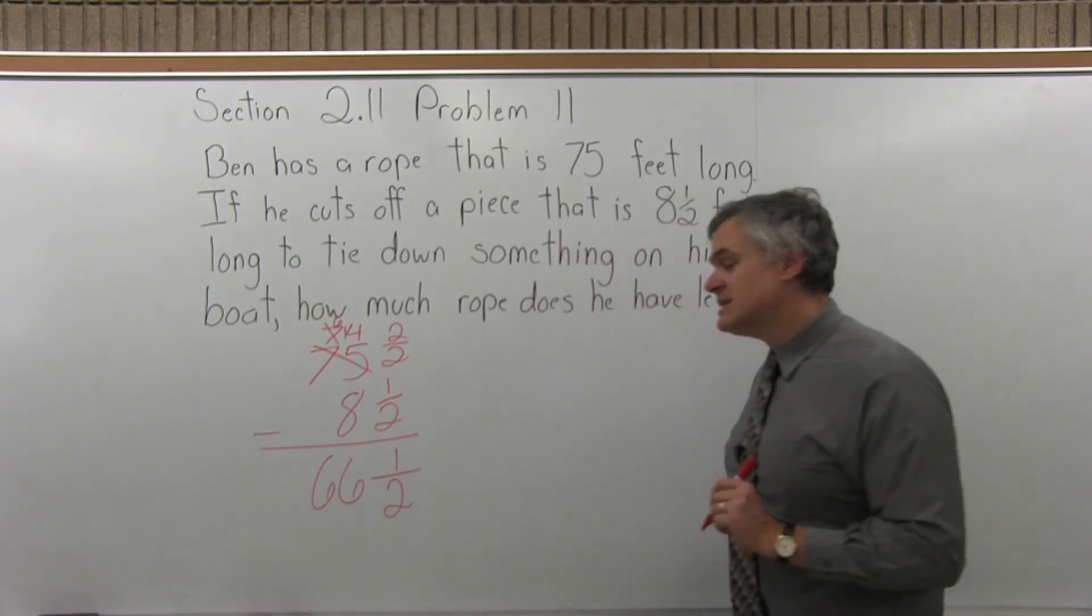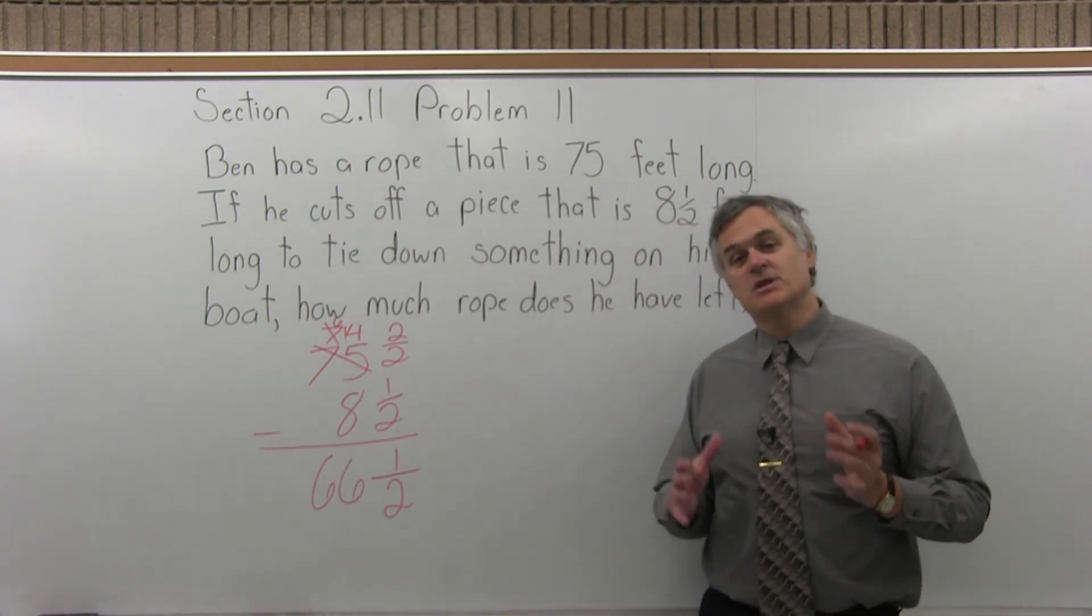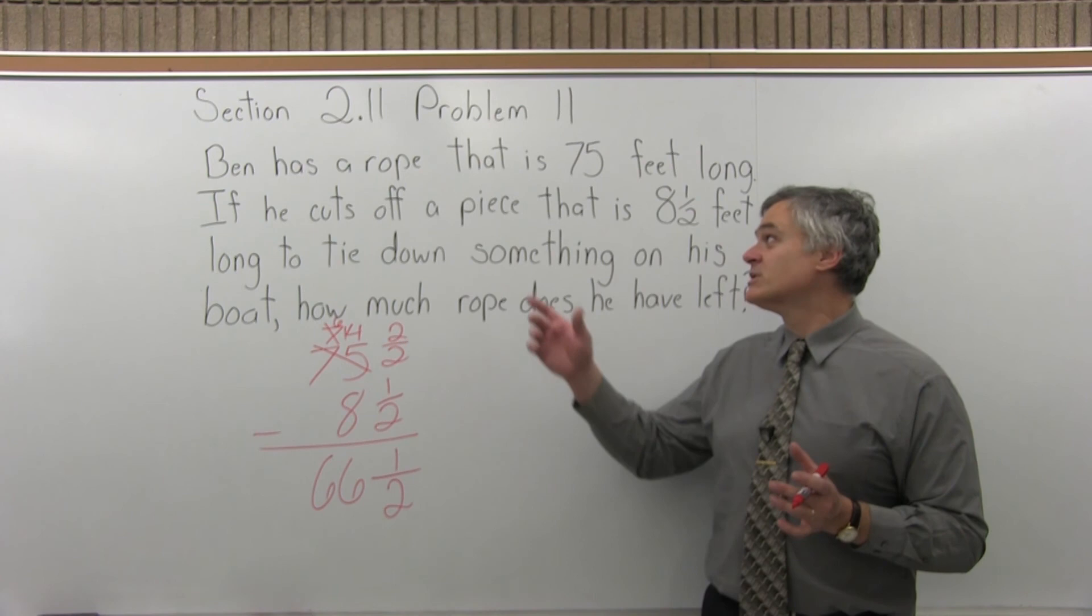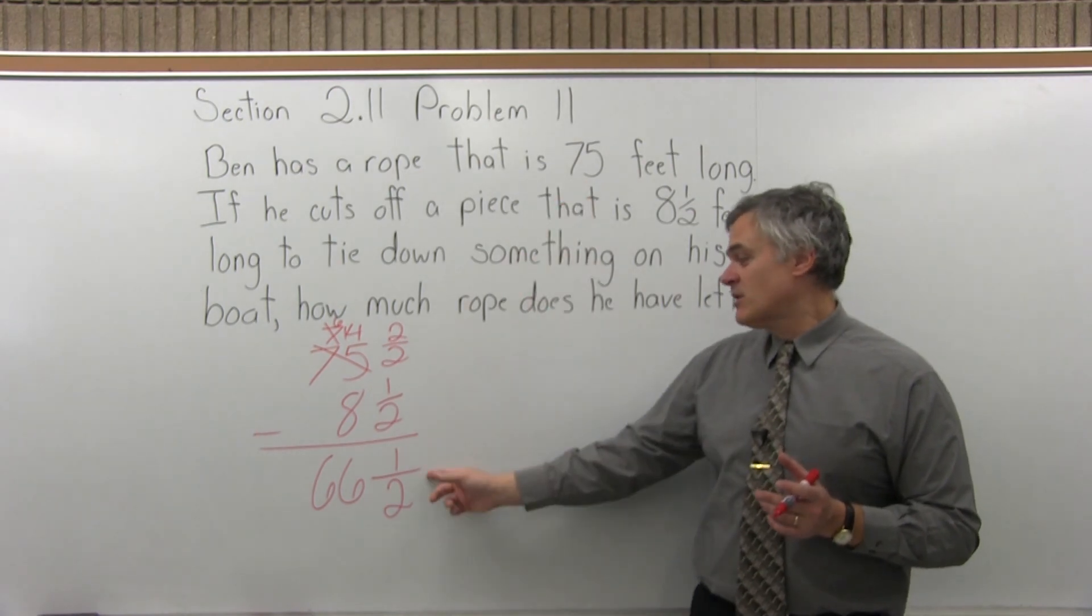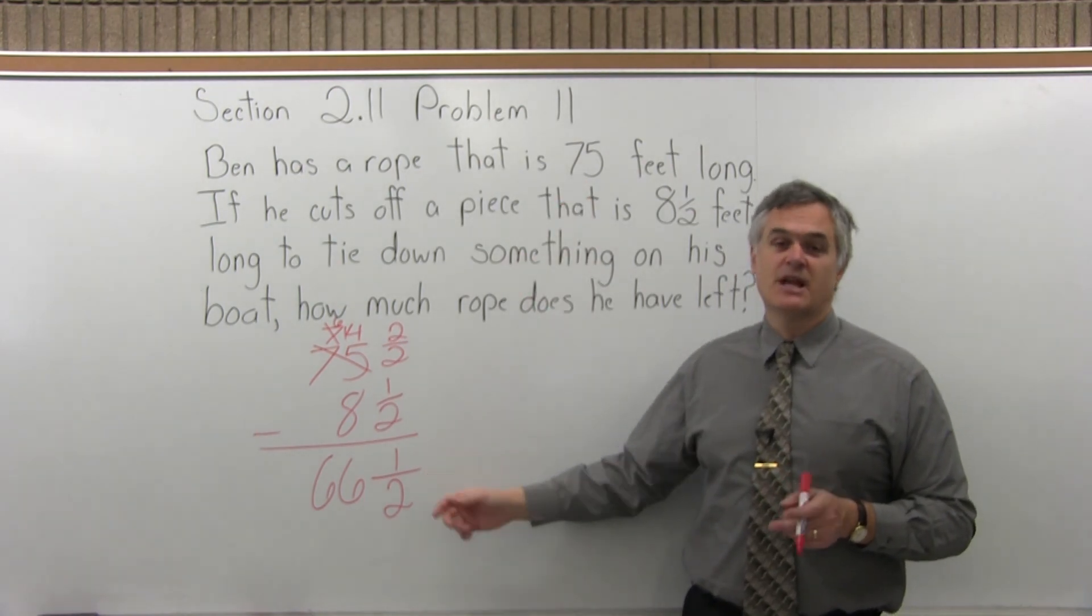So the answer is 66 and a half. So if you cut off a piece of rope that's 8 and a half feet long from the original 75 feet of rope, the amount of rope that remains is 66 and a half feet of rope.